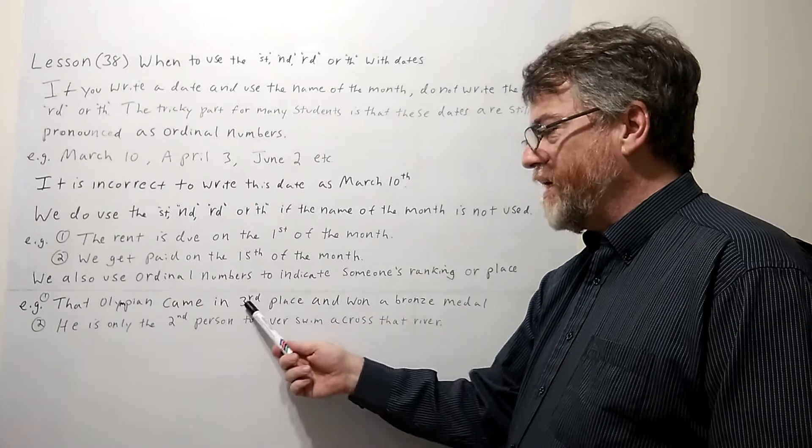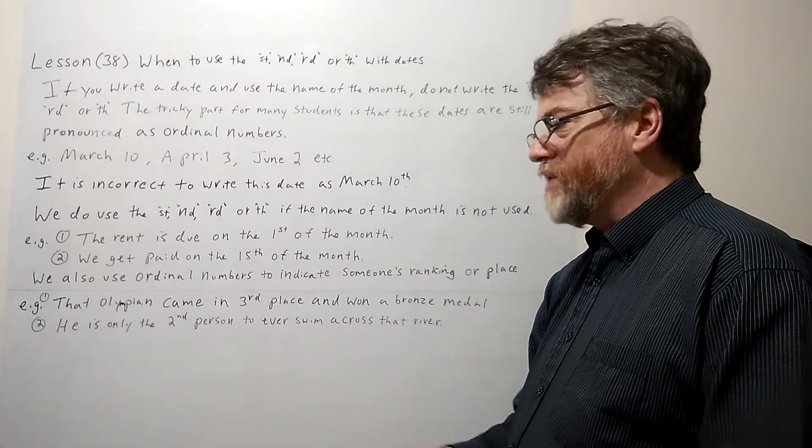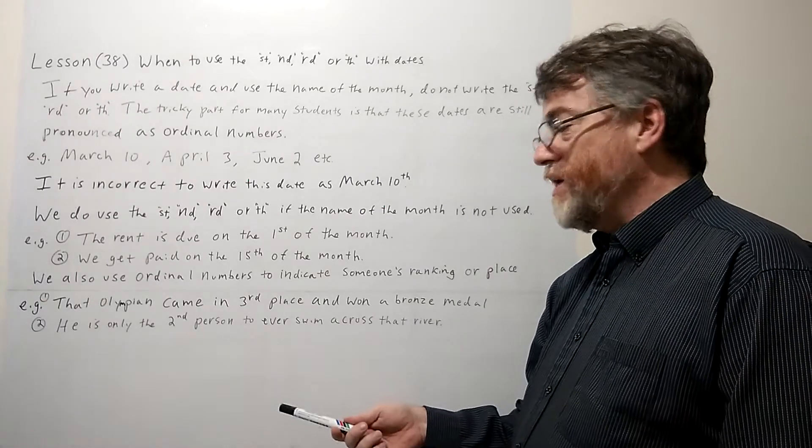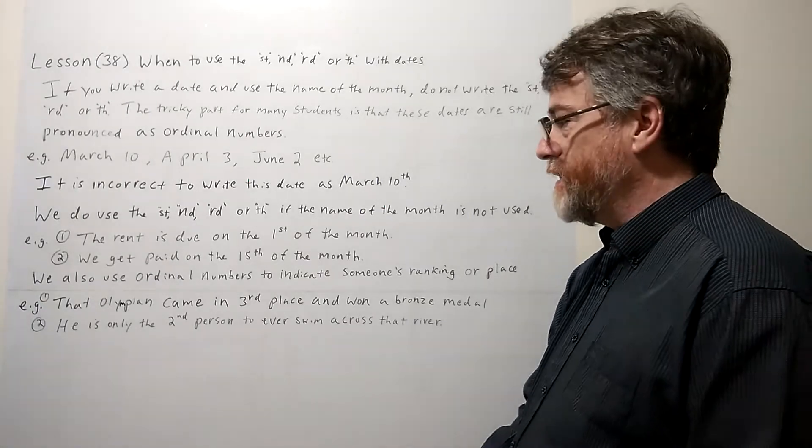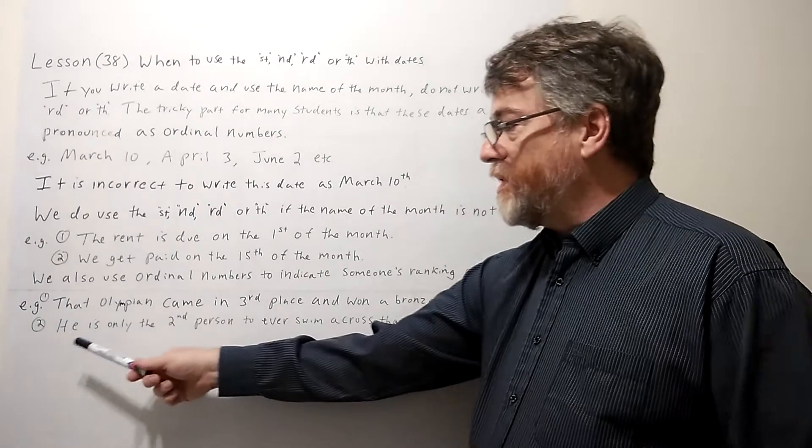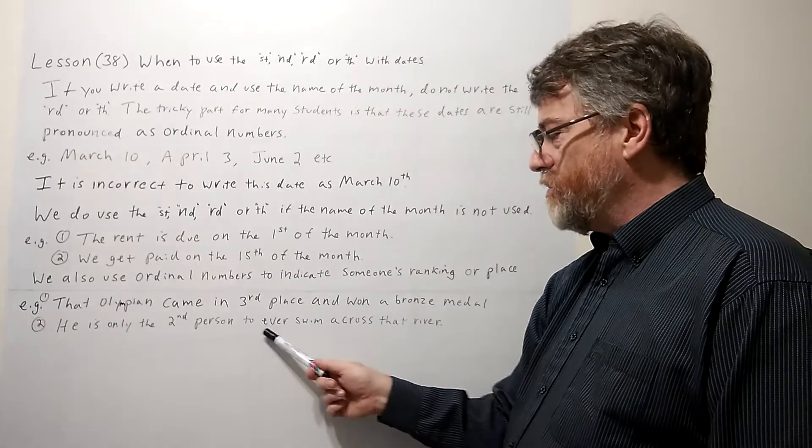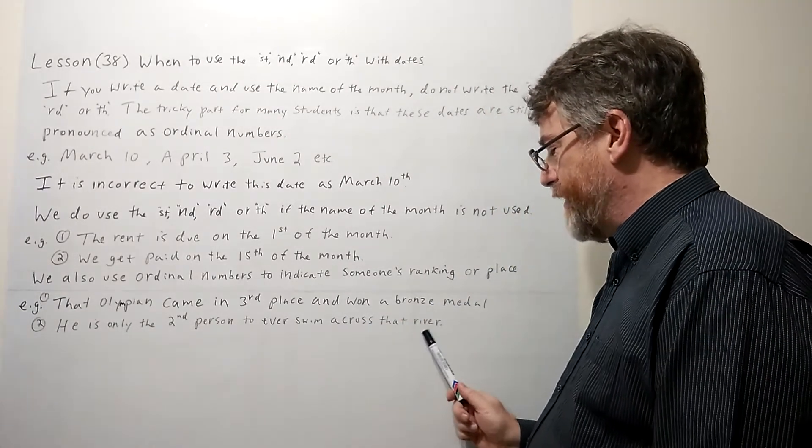That Olympian came in third place and won a bronze medal. Yeah, again here if you didn't have the RD here it would be confusing. That Olympian came in three place. That would not make sense. And the second example: he is only the second person to ever swim across that river.